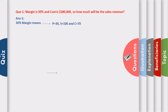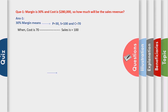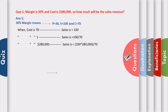Question number one: if margin is 30% and cost is two lakhs and eighty thousand, then how much will be the sales revenue? Step by step: 30% margin means profit 30, sales 100, cost 70. When cost is 70, sales is 100. When cost is two lakhs eighty thousand, sales will be 100 multiplied by two lakhs eighty thousand divided by 70, giving a result of four lakh.